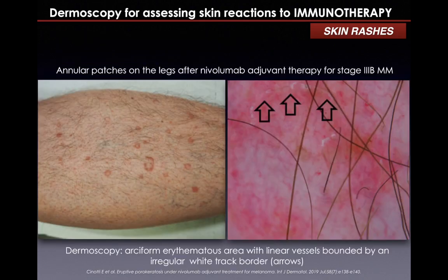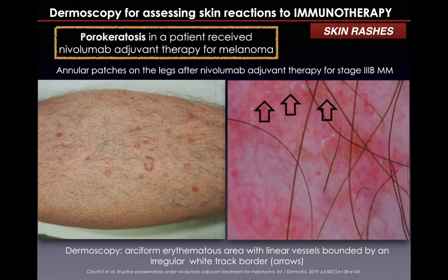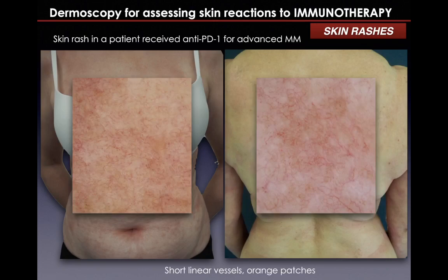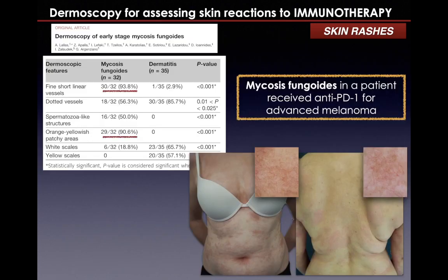In this case, the annular patches appeared by dermoscopy as arciform erythematous areas with linear vessels bounded by an irregular white-track border, suggestive of porokeratosis. We also have another patient with a skin rash dermoscopically characterized by short linear vessels and orange patches — highly specific signs of mycosis fungoides, which has been described by some authors in patients receiving immunotherapy.